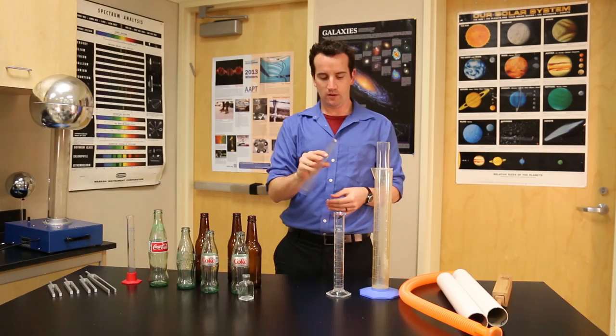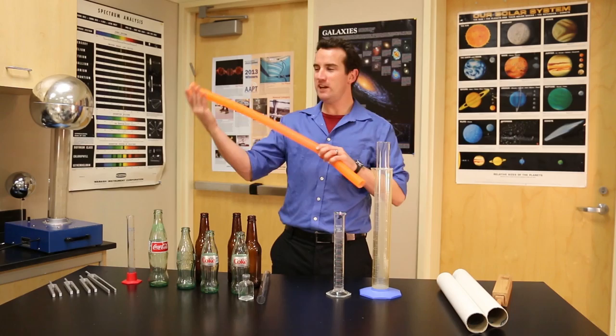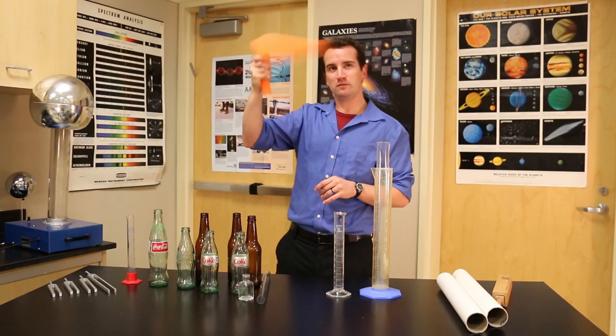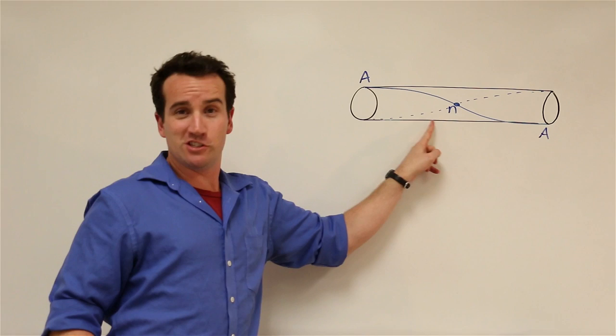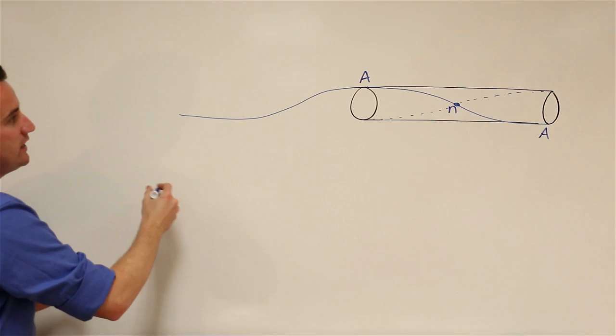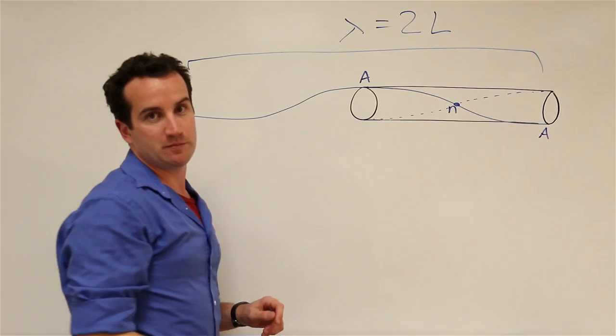What about double open tubes? Well, in this case, both ends are anti-nodes. But between any pair of anti-nodes is a node. And you can see that the wave that fits in here is longer than the tube itself. In fact, the wavelength is twice the tube length.